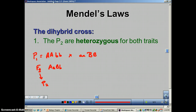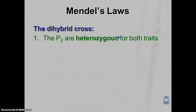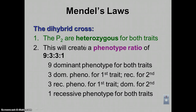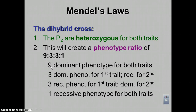So P1s are purebred for both traits, F1s are hybrid for both traits. When you cross your P2s — which are heterozygous for both traits — the phenotype ratio is always 9 to 3 to 3 to 1.